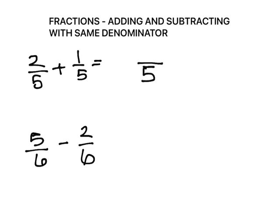The only thing that we need to do is add the top numbers. So what is two plus one? Two plus one is three, and so that is your answer, three-fifths. That's for adding. We're going to move to this subtraction problem.